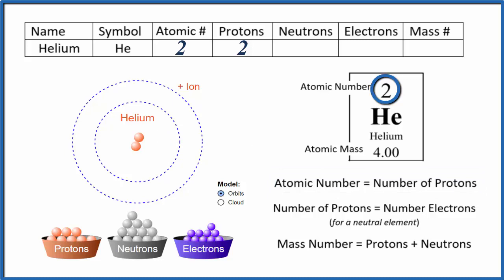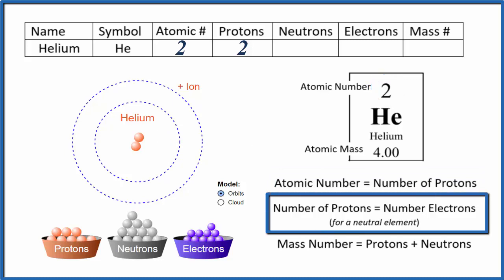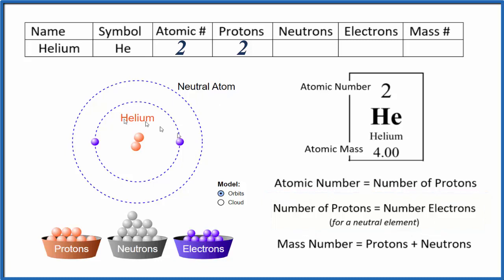When we look at elements on the periodic table, they're all neutral. That means their protons and electrons will be equal - we won't have a positive or minus charge. Let's add 2 electrons to our helium atom and now we see it's a neutral atom like all atoms on the periodic table, so we can put 2 for electrons in our table.